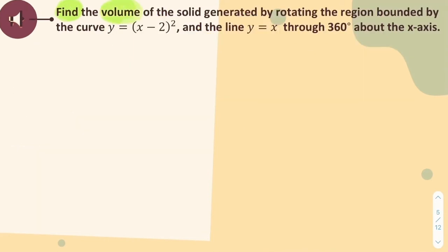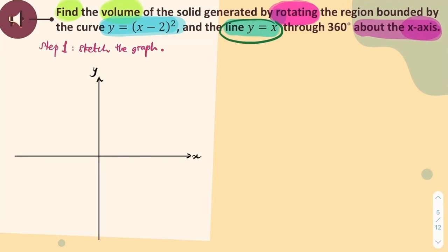Let's go to the second question. Find the volume of a region by rotating the graph about the x-axis. Step 1: We must sketch the graph. The easiest to draw is drawing the linear first, y is equal to x.